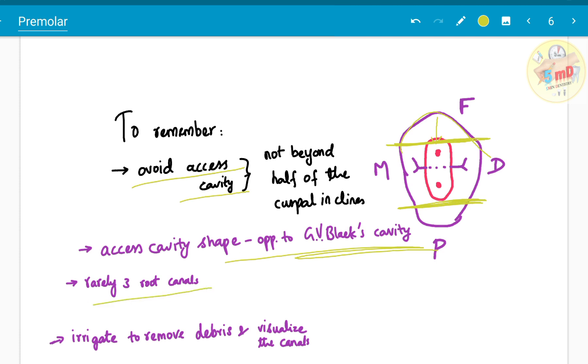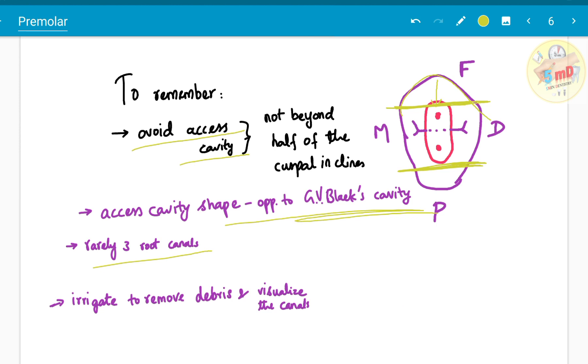Rarely three root canals can be present, so make sure to look out for that also. And irrigate and remove the debris to facilitate the easy location of the pulp canals chambers orifices. These are the takeaway points to remember.